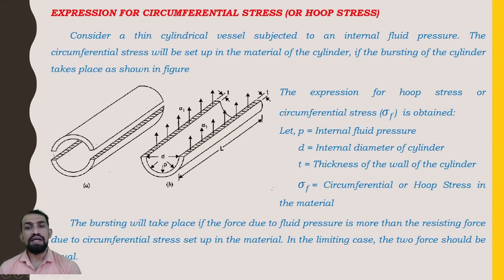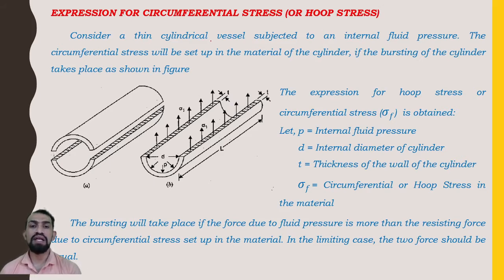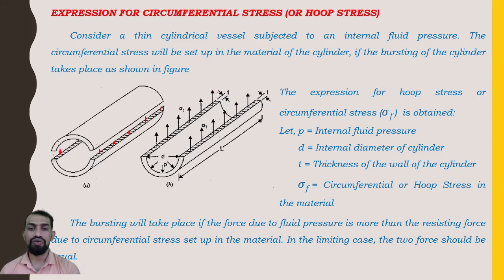We now derive the expression for circumferential stress, also known as hoop stress. Consider a thin cylindrical vessel subjected to internal fluid pressure. The circumferential stress is set up in the material of the cylinder when bursting takes place along the longitudinal section, as shown in the figure. We obtain the expression for hoop stress sigma f.